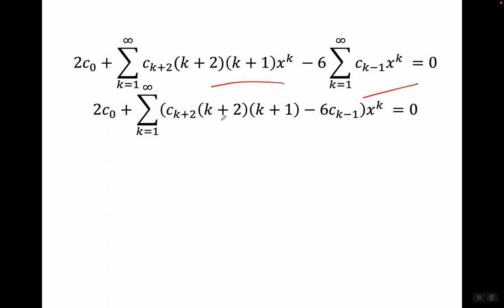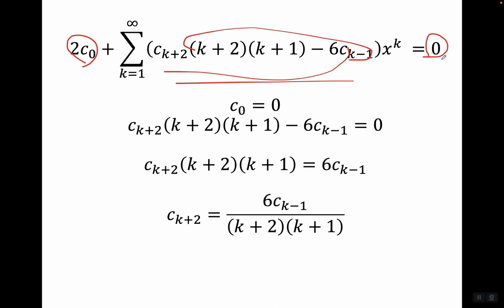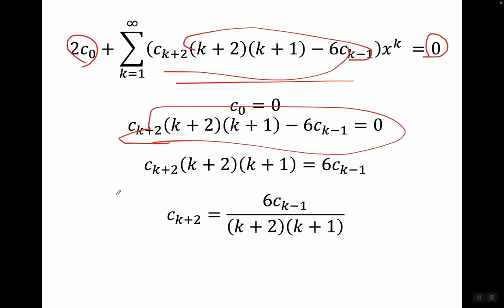So we end up with two c sub zero plus a summation from k equals one to infinity of the quantity c sub k plus two times (k+2)(k+1) minus six c sub k minus one, all times x to the k, equal to zero. By comparing coefficients: the constant term gives two c sub zero equals zero, so c sub zero equals zero. The coefficient of x to the k gives c sub k plus two times (k+2)(k+1) equals six c sub k minus one. Dividing both sides gives the recurrence relation: c sub k plus two equals six c sub k minus one divided by (k+2)(k+1).